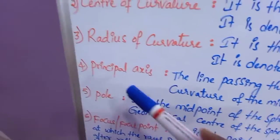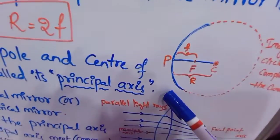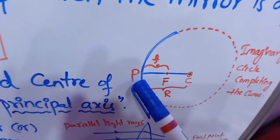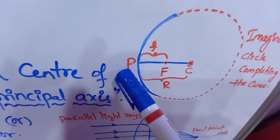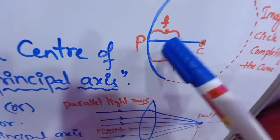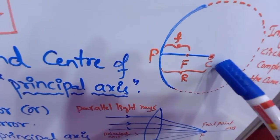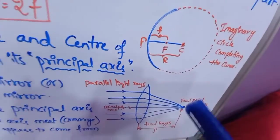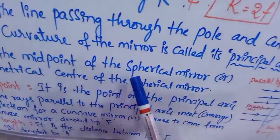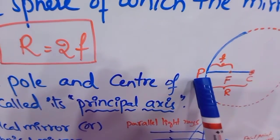Next: principal axis. The line passing through the pole and the center of curvature of the mirror is called the principal axis. P represents the pole, C represents the center of curvature, and the horizontal line passing through both of them is known as the principal axis of the curved mirror. The pole is the midpoint or geometrical center of the spherical mirror, and it is represented with the letter P.